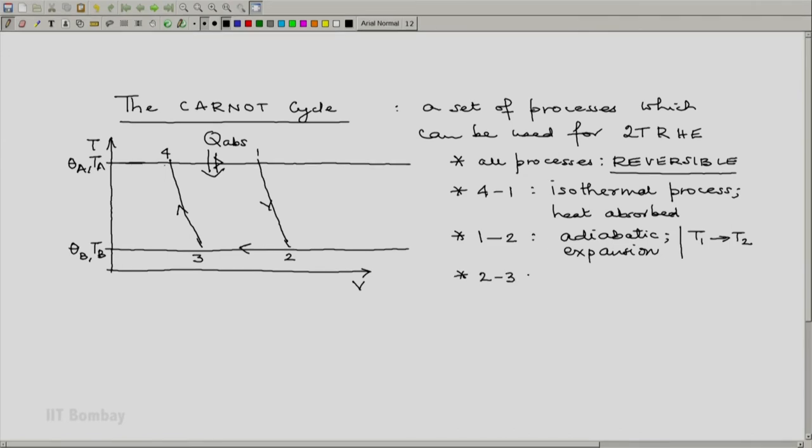The third process 2-3 is an isothermal process and heat is rejected, this process 2-3. And the fourth process which completes the cycle is 3-4, is adiabatic but it is a compression process. And during this compression process the temperature rises from T3 to T4.